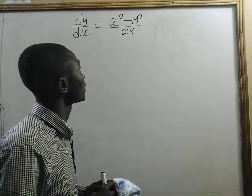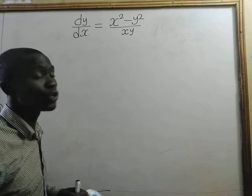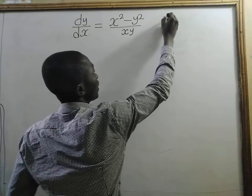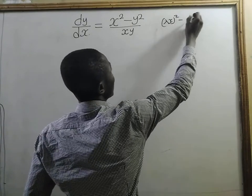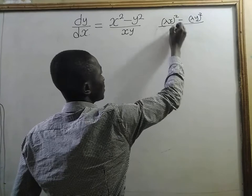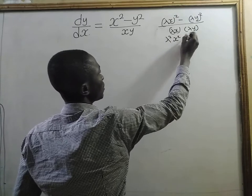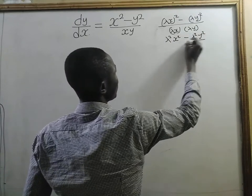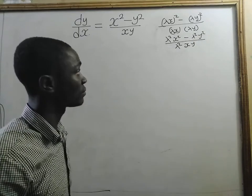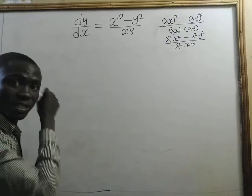This is a very simple question. It's a homogeneous equation, so let's check for homogeneity. If we multiply by lambda, we get lambda squared x minus lambda squared y squared divided by lambda squared xy. So this is homogeneous of degree two. That's very great — now let's solve it in a simple way.